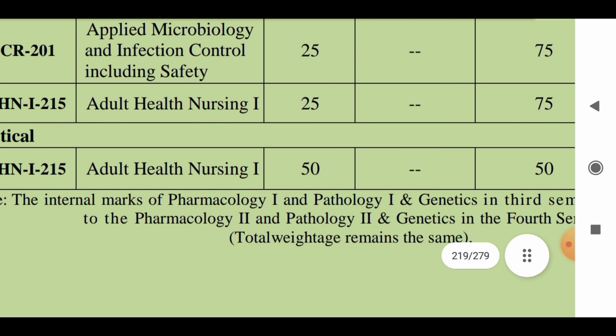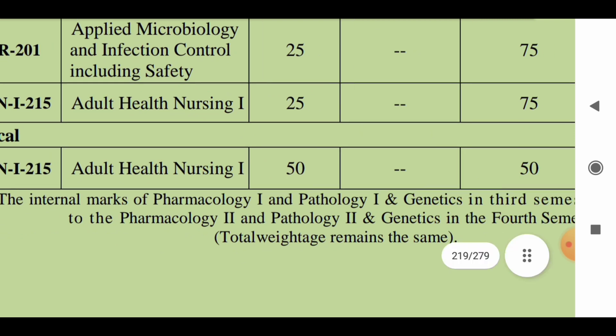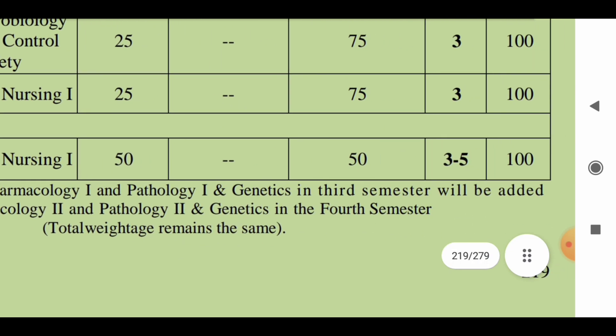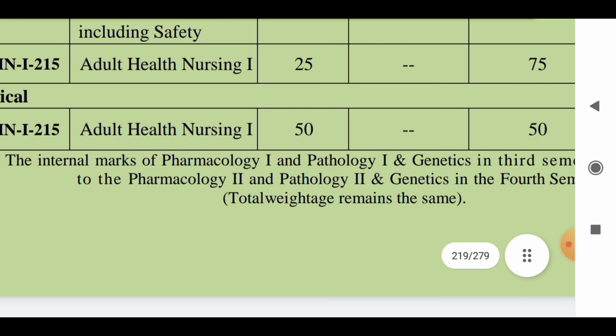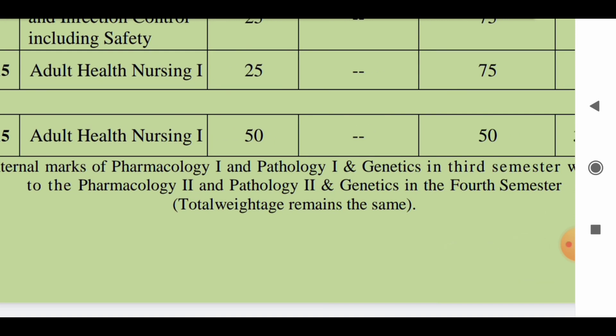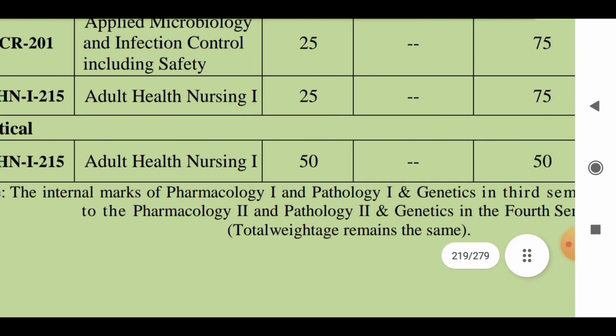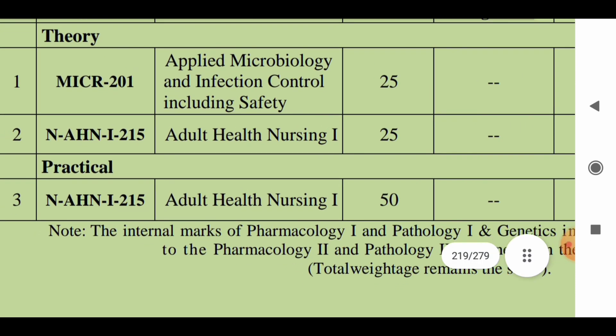The internal marks for Pharmacology and Pathology earned in the third semester will be added to Pharmacology 2 and Pathology 2 in the fourth semester. Therefore, the Pharmacology and Pathology examinations are not conducted in the third semester — they will be held in the fourth semester as Pharmacology 2 and Pathology 2, and the exam will take place towards the fourth semester only.